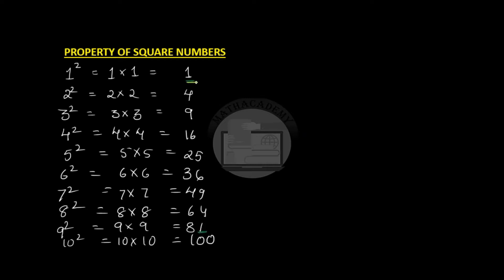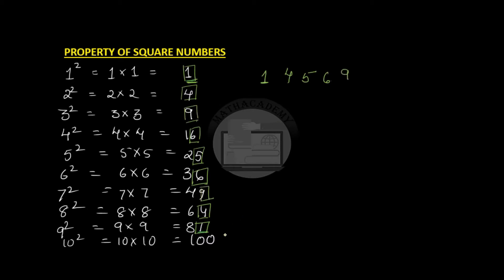What do we see? The square of a number can end with the digit 1, it can end with a digit 4 — here and here — it can also end with the digit 5, it can also end with the digit 6, it can also end with the digit 9, and also ends with the digit 0. So we see that none of the square numbers ends with the digit 2, 3, 7, or 8.